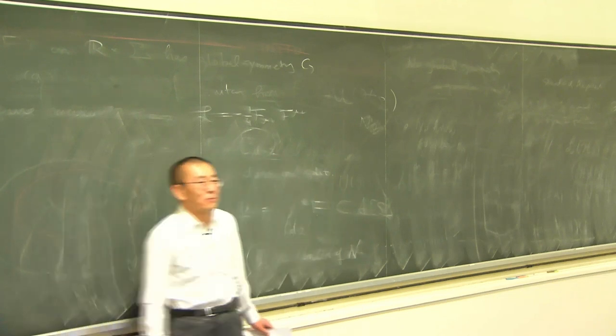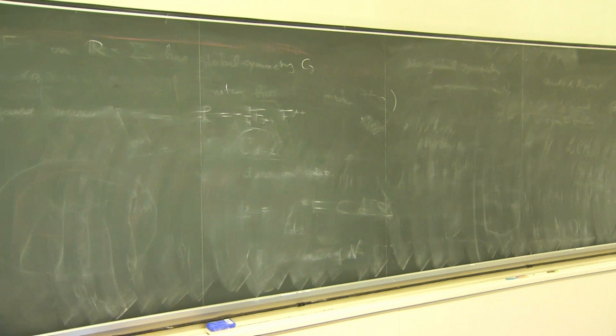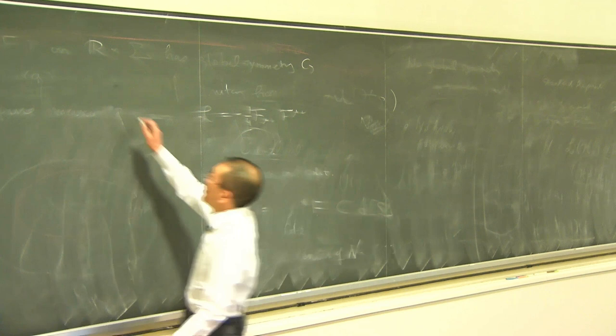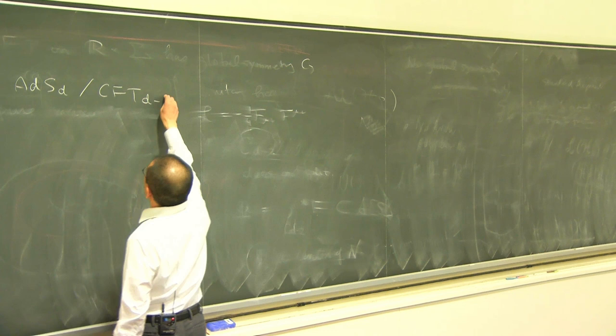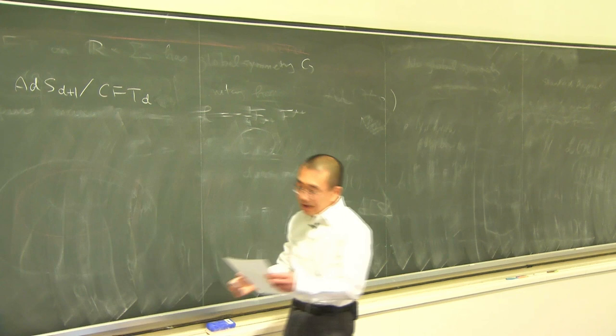Let me spend the first 10 minutes or so to briefly review the basic idea of AdS/CFT correspondence, just so that everybody is on the same page and we're going to use the notation. We start with the D-dimensional anti-de Sitter space, which is supposed to be dual to a conformal field theory in one lower dimension. AdS is D+1 dimensional and the conformal field theory is D dimensional.